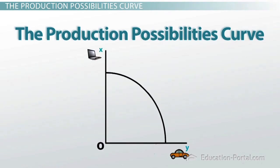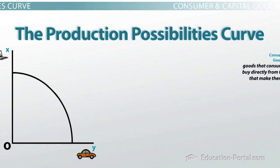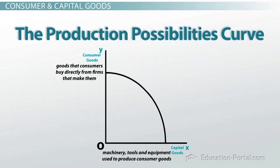Let's say we have a Production Possibility Curve showing the production of two goods — cars and computers. Economists also use the PPF model to illustrate two categories of goods: both consumer goods and capital goods. Here's what that PPF curve looks like.